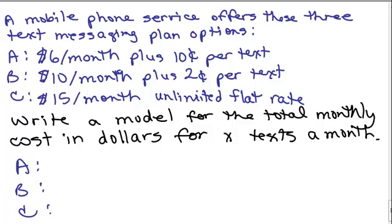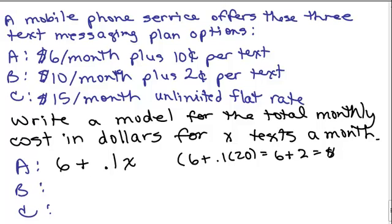Let's write a model for our actual cost based on X texts. This could help us to decide which one to choose. So what's a model for the total monthly cost for X texts on Plan A? That would be $6 plus 10 cents a text. How do you write 10 cents in dollars? 0.1 times how many texts you have. So there's a model. That would be your cost in dollars. For instance, when we had 20 texts, we actually did 6 plus 0.1 times 20, which was 6 plus $2, and that's how we came up with our $8. So this makes sense for 20 texts.